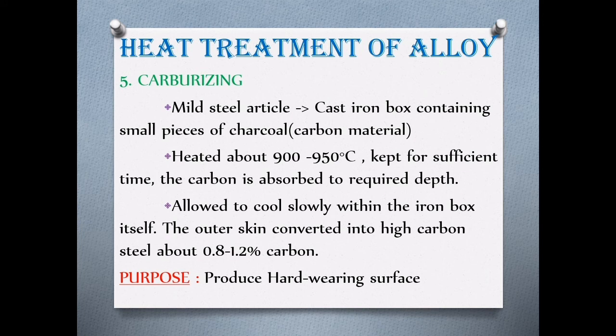Carburizing uses a cast iron box with small pieces of charcoal and carbon materials. Mild steel is placed in the box and heated to 900–950 degrees Celsius. The cast iron box is used to surround the steel. The outer skin becomes high carbon steel, with carbon content of 0.8 to 1.2 percent. Carbon is absorbed by the steel surface, producing a hard wearing outer skin.